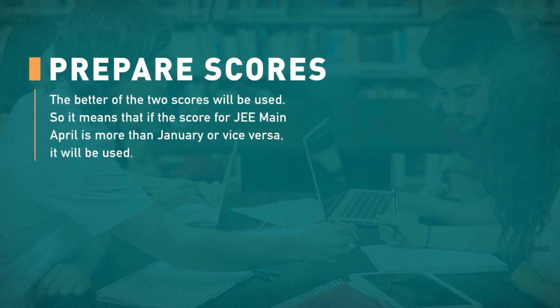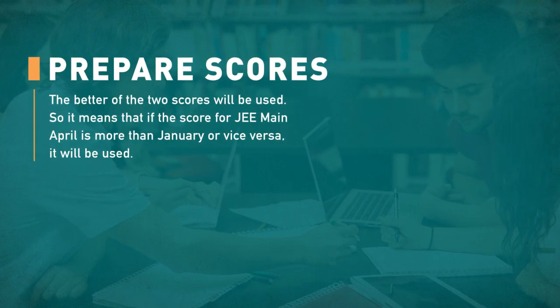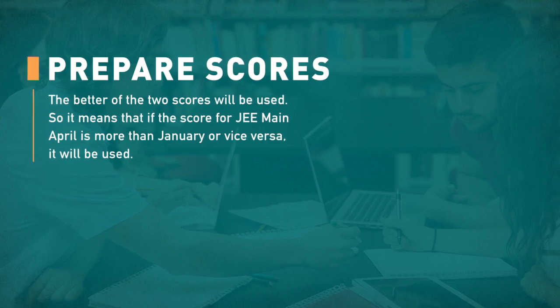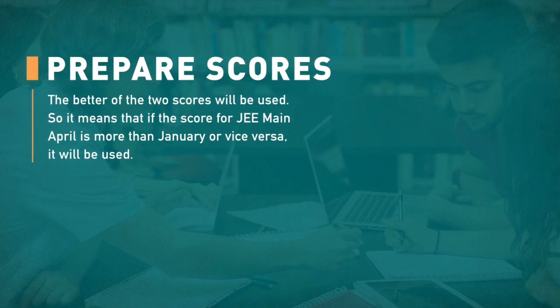So, it means that if the score for JEE Main April is more than January or vice versa, that score will be used. Now, let's understand how the rank list will be prepared for JEE Paper 1.